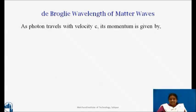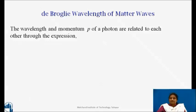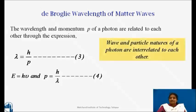As photon travels with velocity c, its momentum is given by p is equal to E upon c. Therefore, p is equal to h nu upon c. Therefore, momentum is equal to h upon lambda. Thus, the wavelength and momentum p of a photon are related to each other through an expression lambda is equal to h upon p. De Broglie proposed that the relation between the momentum and the wavelength of a photon is universal and it must be applied to photons and material particles as well. Though the quantities nu and lambda are wave properties and the quantities E and p are particle properties, they are related to each other, which shows that wave and particle nature of a photon are interrelated to each other.